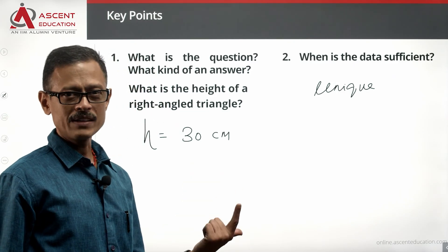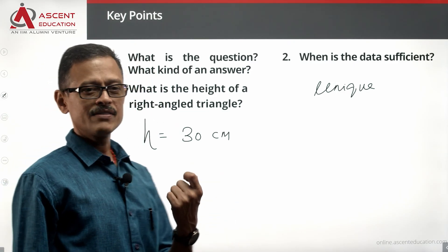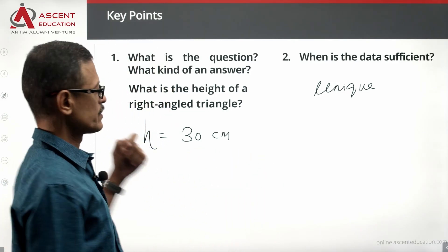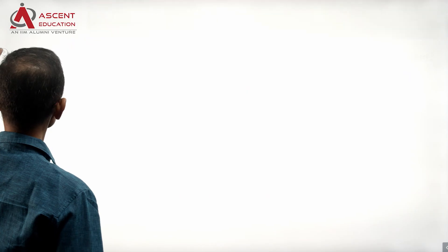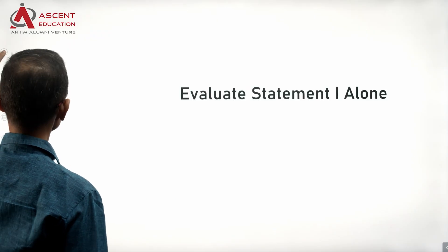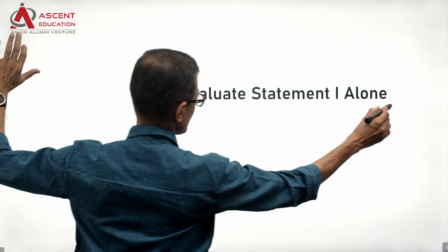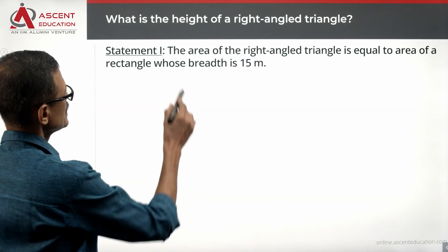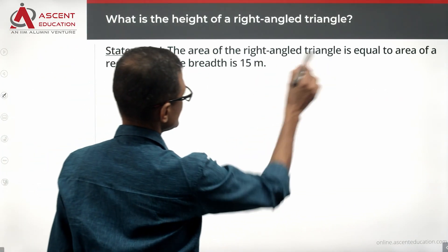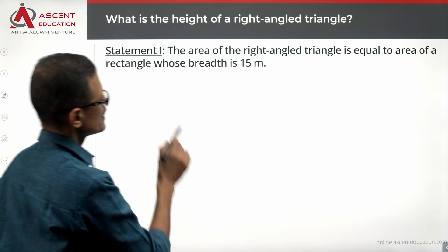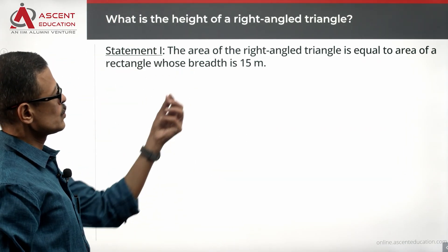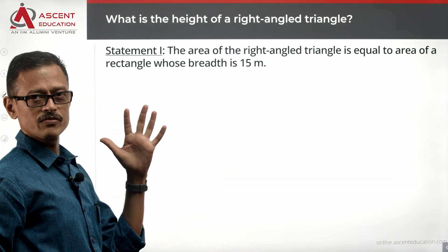Let's take a look at Statement 1 alone and see whether we get a unique value for the height of this right triangle. Statement 1 says: the area of the right triangle is equal to the area of a rectangle whose breadth is 15.